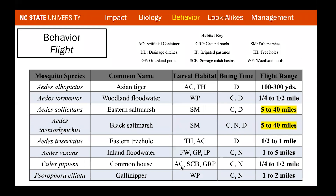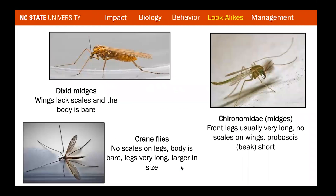Knowing how far a mosquito can fly is also important for setting client expectations. Saltmarsh mosquitoes are the strongest flyers and can travel 5 to 10 miles. Domesticated species like Aedes albopictus don't tend to go far. If you find a saltmarsh mosquito but can't find the source, the problem might be 5 to 10 miles away — not your problem to solve. But if you find Aedes albopictus, you can be fairly certain the issue is coming from 1 to 300 yards away. This helps prevent callbacks and dissatisfied customers.